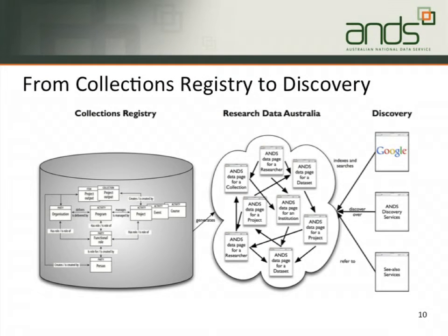What we're doing with this — you're not meant to be able to read the small print, don't worry — is using the Collections Registry to build a series of webpages that we call Research Data Australia, to enable discovery. So it's from feeds on the left into the Collections Registry, building this set of interconnected webpages to enable a variety of discovery mechanisms — for researchers, research projects, collections, organisations, and services all linked together to build this rich, complex interconnected mesh.